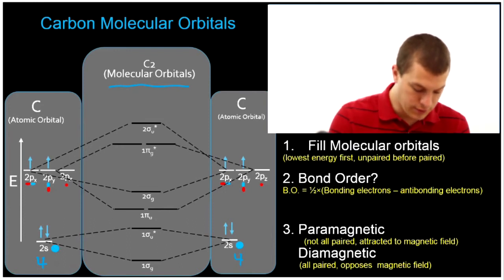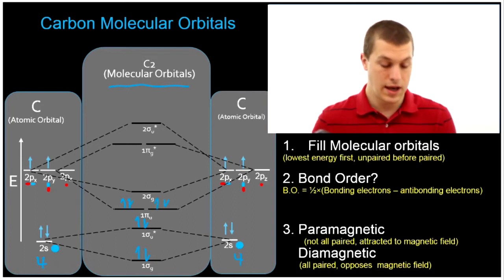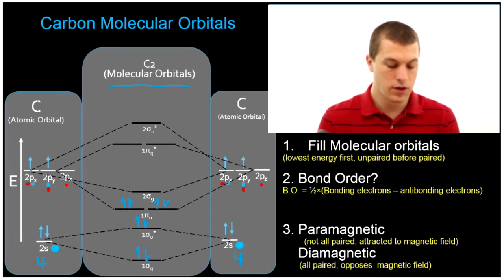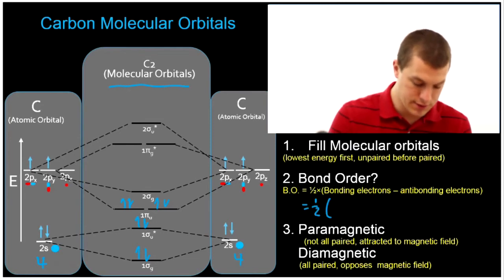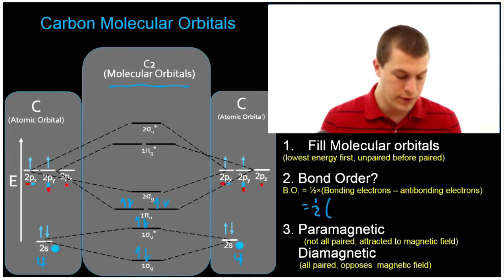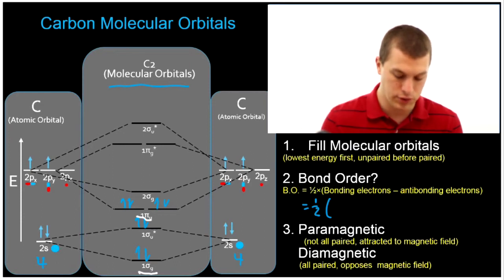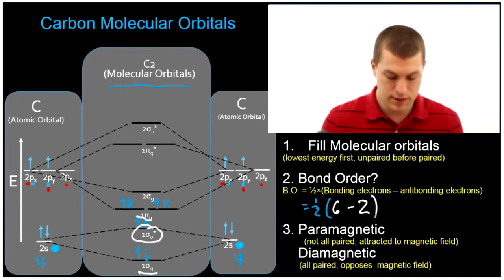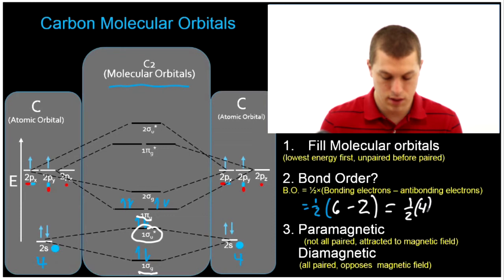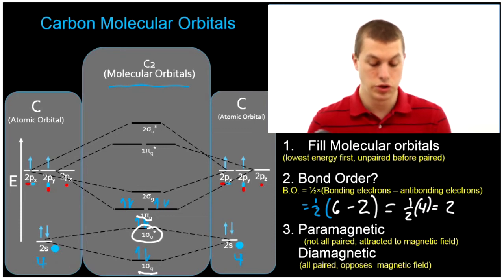So I'm going to fill in my eight electrons: one, two, three, four, five, six, seven, eight. Now I can calculate my bond order: one half times the number of bonding electrons. I just look for where the label for my molecular orbital has no asterisk — that's that one and that one, giving me a total of six bonding electrons, minus the antibonding electrons right here. That's going to give me one half times four, and that's going to give me a bond order of two for C2.